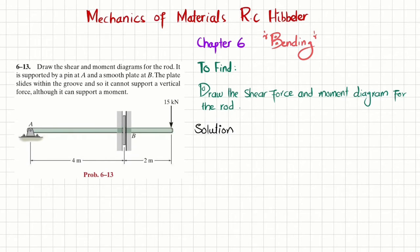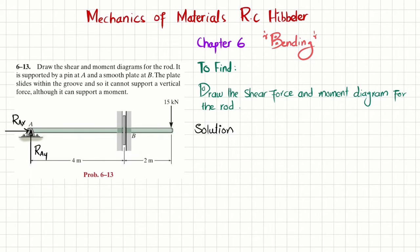Let's start with the solution. The first step is: if you remove the pin support at point A, you will have a vertical reaction force RAy and a horizontal reaction force RAx. If you remove the plate, since the plate only supports a moment, we replace it with a moment M. We will find RAx, RAy, and M using the equations of equilibrium.